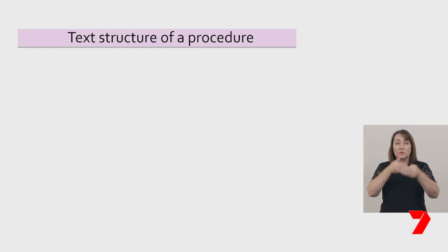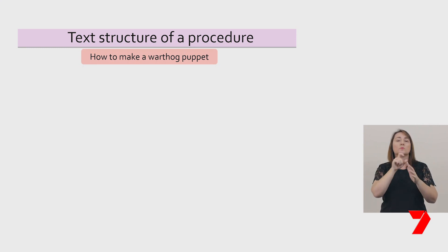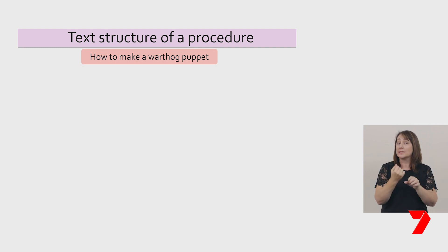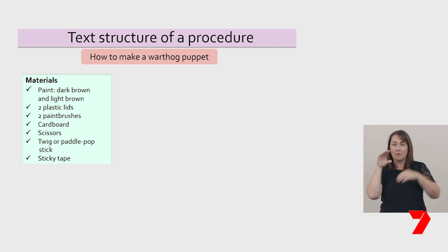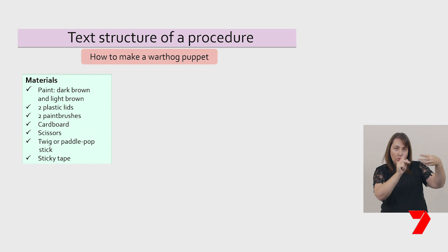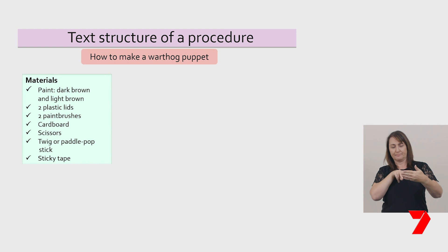Let's have a look at the features of a procedural text. This procedure is telling us how to make a puppet. The procedure has a goal or aim that clearly states what is to be done. This is often in the heading or title. For example, in this procedure, the goal is 'How to make a warthog puppet.' A procedure also has a list of materials or things you need, often listed in the order that you will use them. To make a warthog puppet, I can see I will need very specific materials.